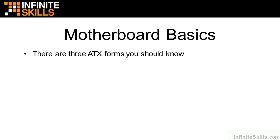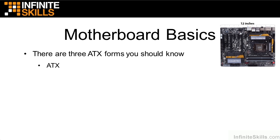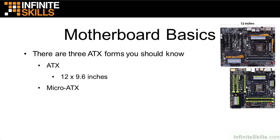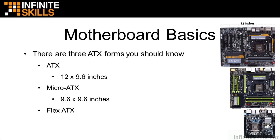There are three ATX forms that you need to know. The first one is standard ATX — notice it's 12 inches wide by 9.6 inches. This is the largest one, and it's what we see in desktop or tower computers. Then there's the micro ATX, which is 9.6 by 9.6 inches — smaller, so you end up with a smaller case. And then there's the flex ATX at 9.5 by 7 inches. You can see the relative sizes and also notice the locations of the slots as giveaways for which one you're looking at.